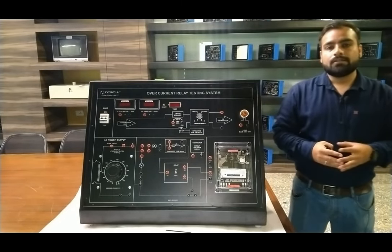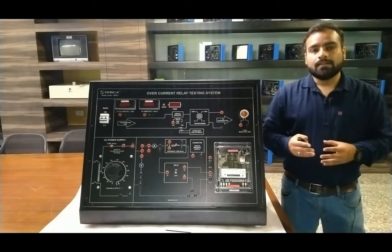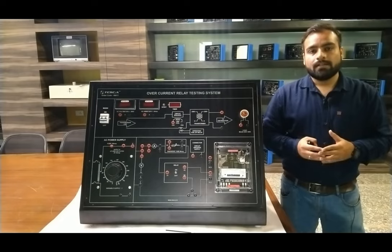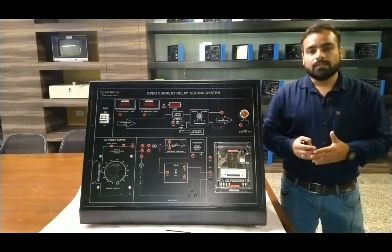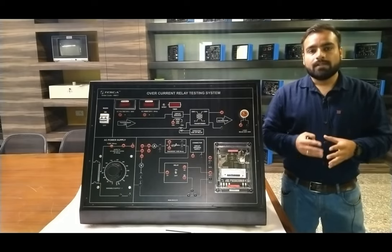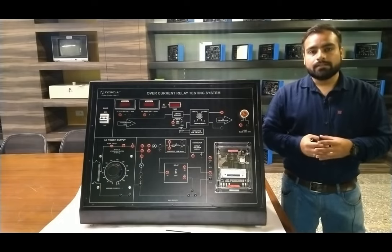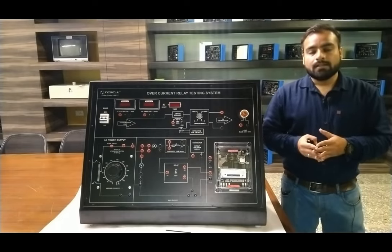In short, when the current value in the overcurrent condition is increasing continuously, the tripping time of the relay will decrease inversely. So when the current value is very high, the tripping time is very low, providing protection as per the time dependency, so that the distribution system will be isolated properly, and if the current is due to any surge or false conditions or any load increment, it will be maintained as per the tripping value.